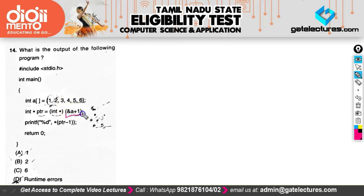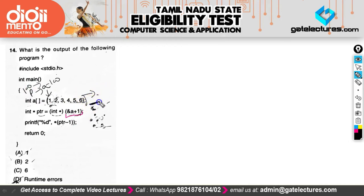A pointer is assigned the address of a plus 1. Here, '&a' points to the entire array — if it is at address 100, then '&a + 1' moves past the complete array, pointing to the address just beyond it. The printf statement uses '**( pointer minus 1 )': reducing by 1 brings us back to point at the last element of the array, which is 6. So the answer is 6.